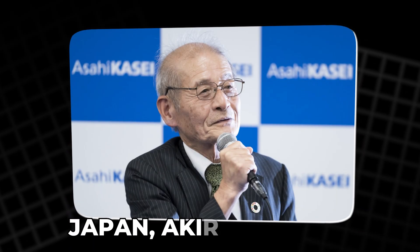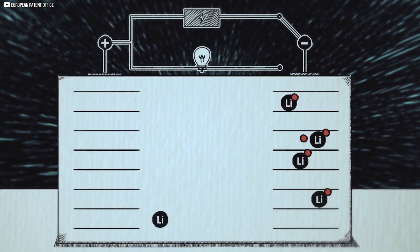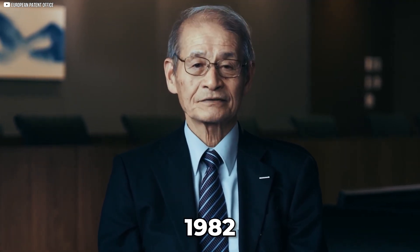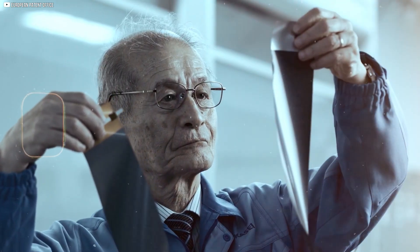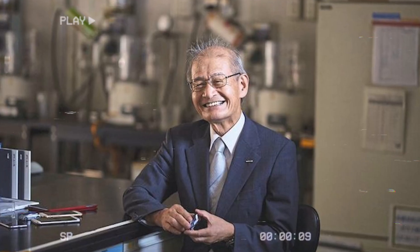In Japan, Akira Yoshino sought a stable anode. He experimented with plastics that could conduct electricity, but they stored too little energy. Frustration grew as each attempt failed. Then, in 1982, Yoshino discovered Goodenough's work on lithium cobalt oxide. Suddenly, the puzzle made sense.